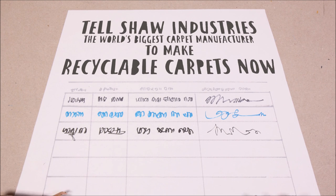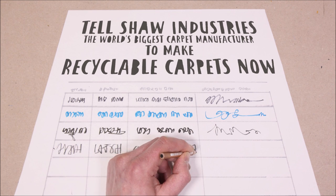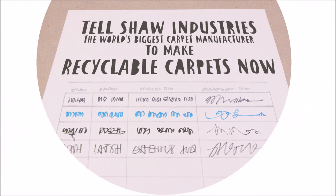So sign the petition and tell Shaw Industries to cut the fluff, make recyclable carpets, and ensure they live happily ever after.